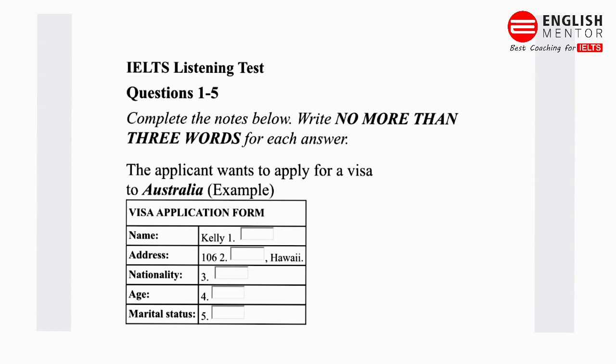And your address? Apartment 106, Kingston Street, Hawaii. Kingston Street, Hawaii? Yes, that's correct. So you're an American? Actually, I was born in Japan but moved to Hawaii six years ago. And can I have your age, please, Mr. Okamura? I'm 32. And are you married? Yes, I am. My wife's Chinese.